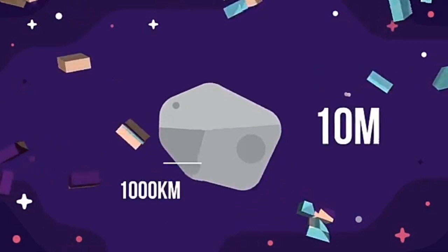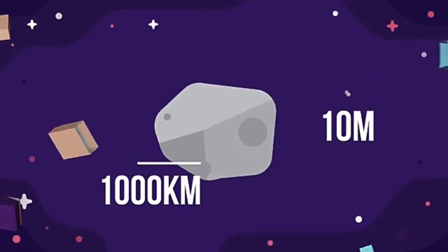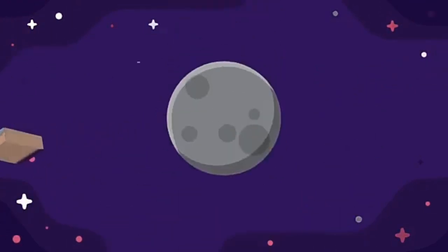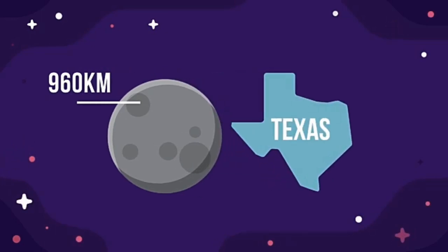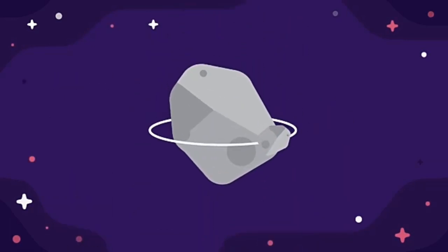Sizes vary from 10 meters to 1,000 kilometers wide. Ceres is the largest we have ever found at 960 kilometers wide, which is about as wide as Texas, and big enough to be classed as a dwarf planet. Some asteroids even have their own moons.